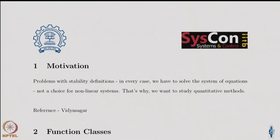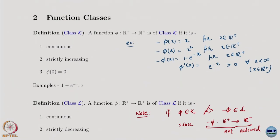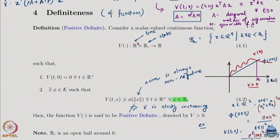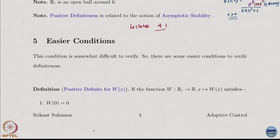We started with some preliminaries — we talked about function classes: class K, class L, class KR and so on. Then we went on to discuss definiteness and how they are connected to these function classes, and also how to extend the notions of definiteness of matrices to definiteness of functions. Basically, any positive definite matrix is going to lead to a positive definite function once we construct a quadratic form out of it. We saw some nice examples and also had easy conditions to test definiteness.